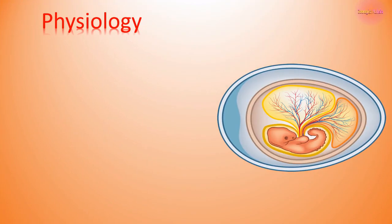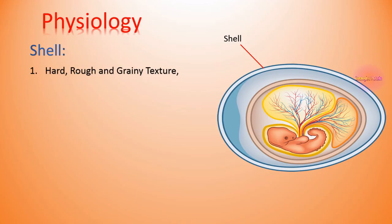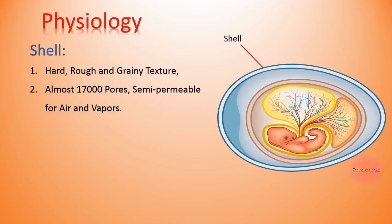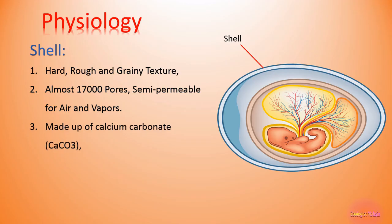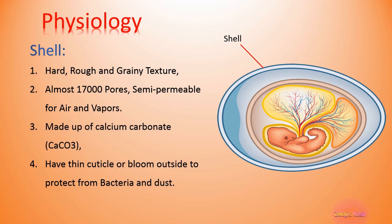Let's start from outside. The outermost part of the egg is the shell. The shell has a hard, rough, and grainy texture — you can feel its roughness by rubbing your finger on it. It has almost 17,000 pores and is semi-permeable, meaning air and vapors can cross this shell easily. The shell is made up of calcium carbonate.